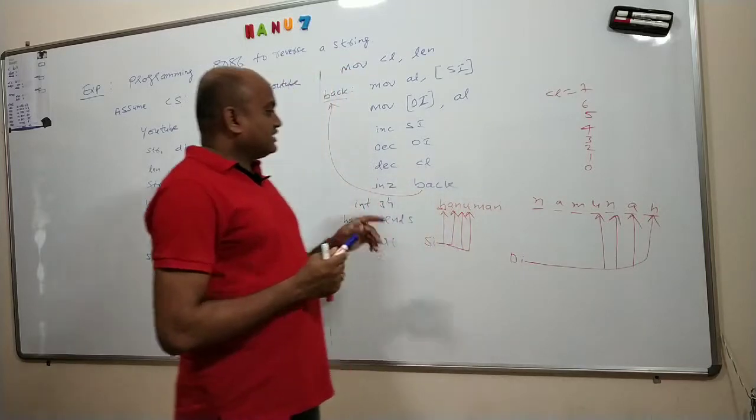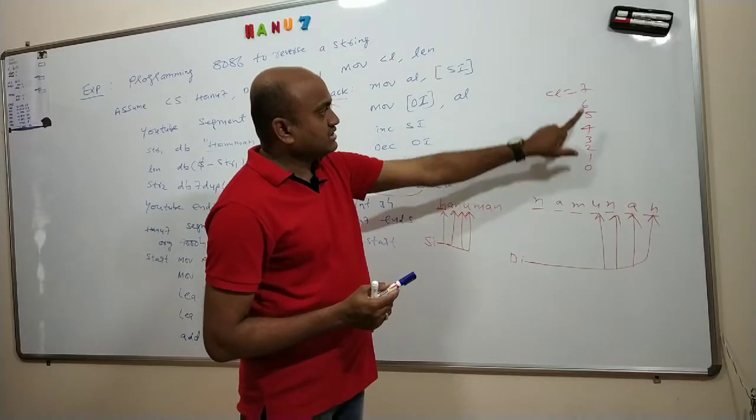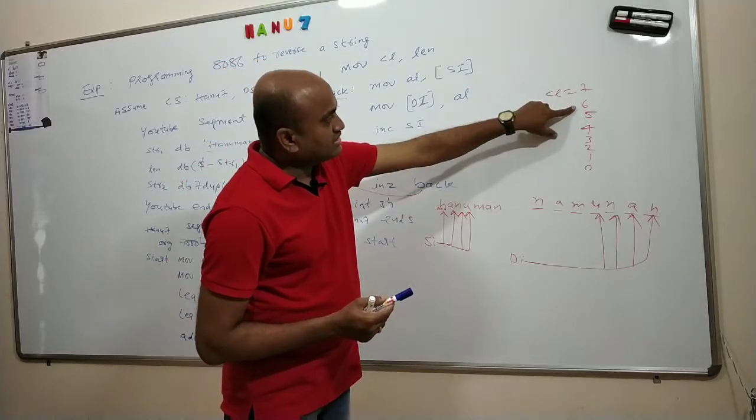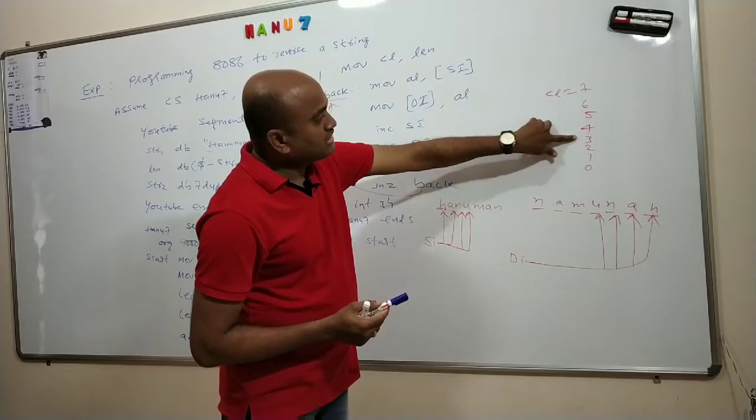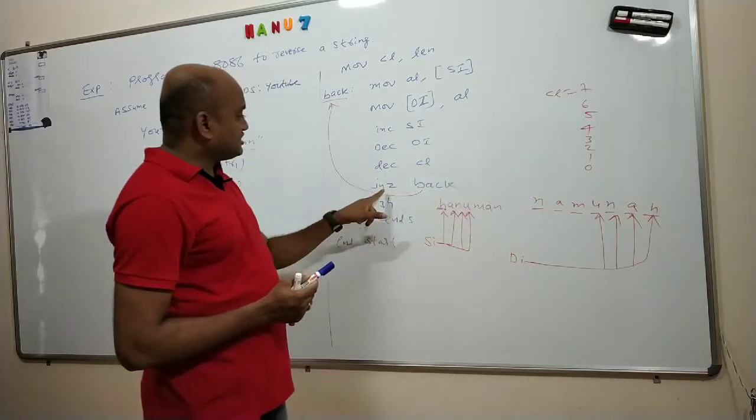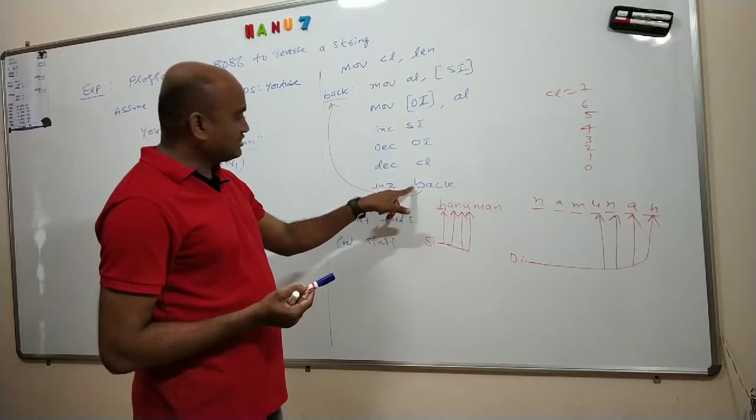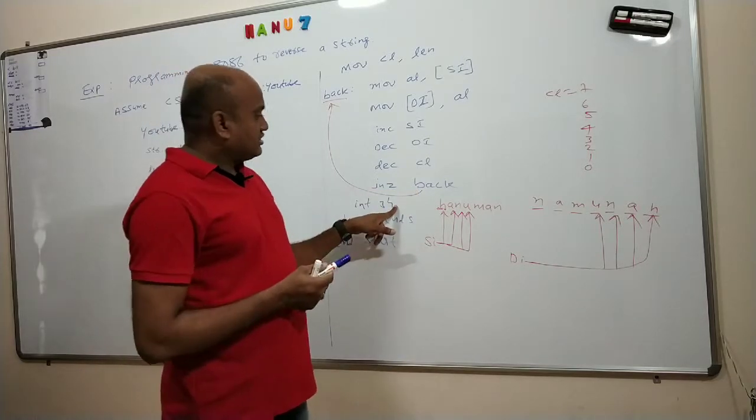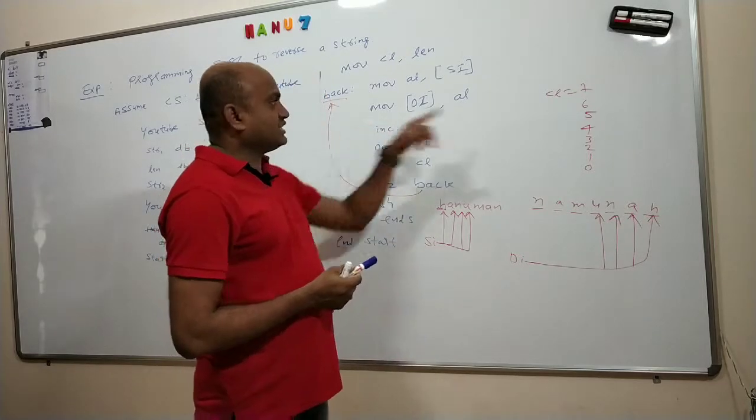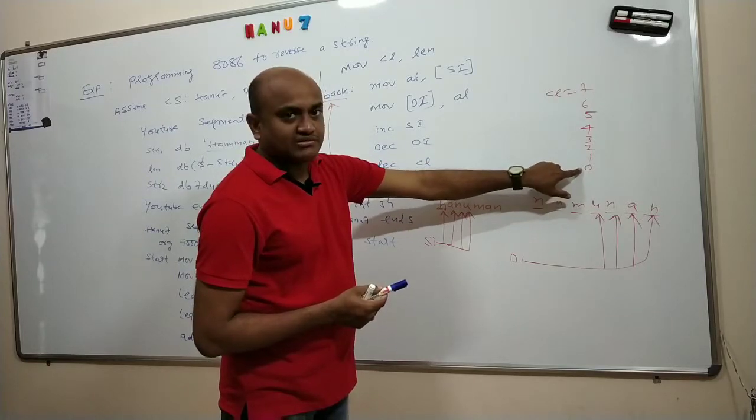In such a way that it is checking the value in the CL whether it is zero or non-zero. There are seven characters. So first time I copied H, next A, N, U, M, A, N. After this you see there is a zero. If there is a zero, whatever this is checking, jump if not zero, go to back. Otherwise go there. Because there is no zero, it is going back every time. No zero, no zero, no zero.